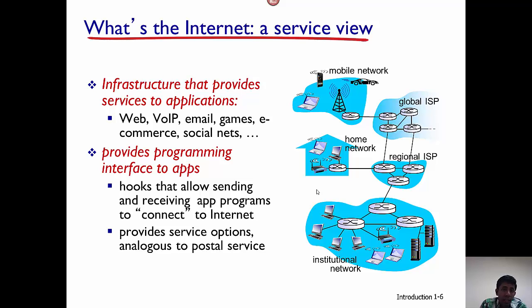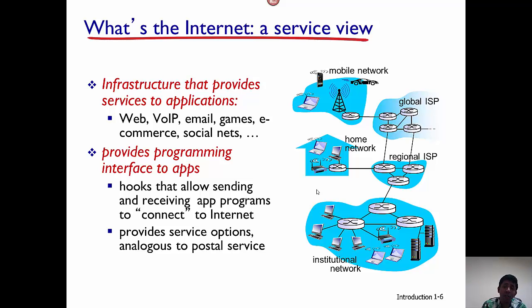The other view of the internet is the service view. The nuts and bolts view treats the internet as a machine and examines its different components. The service view is different — users view the internet as a service. For example, when you are using the internet through your end host, you do not want to know how many routers are in the internet. What you want to know is what kind of applications the internet can run. For example, you are interested in surfing the web, using voice over IP such as Skype, or sending emails. These are the applications you want to run over the internet, and the internet is a medium that gives you this kind of service. In this course on computer networks, we'll look at the nuts and bolts view and explain what makes up the internet and how it works.